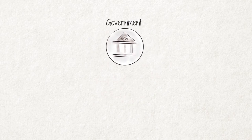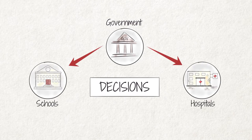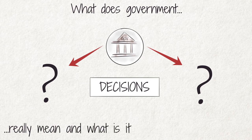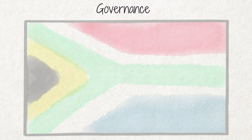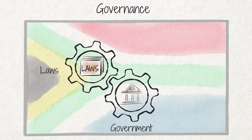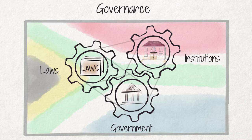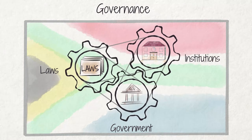We often hear that the government makes all the decisions or that the government will build schools and hospitals. But do we know what government really means and what it is actually responsible for? Governance is the form or system of rule by which a state or nation is organized and governed. This happens through a system made up of laws and institutions.